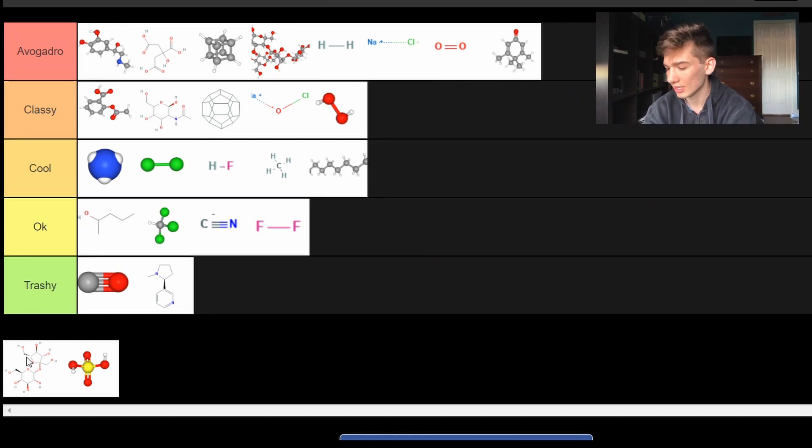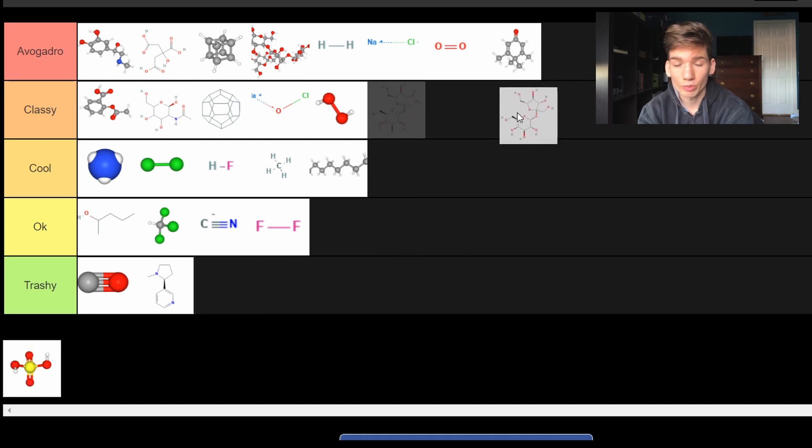Next up is sucrose. Very yummy. It's plant sugar. Makes your fruits taste real nice. Definitely a classy chemical for sure. Gives you some energy. You can see you got plenty of oxygens on there. Got some nice alcohol groups. It's pretty good.